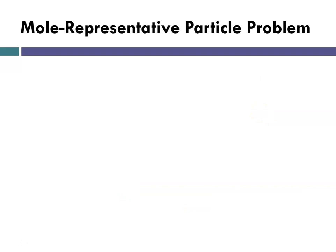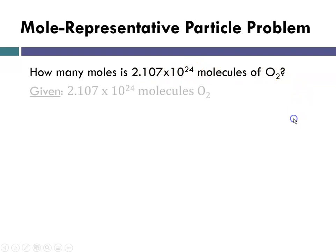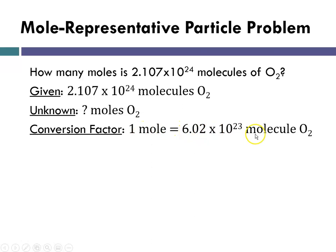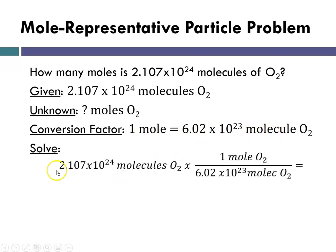And now I'm going to give you an example of a mole representative particle problem. How many moles is 2.107 times 10 to the 24th molecules of O2? So given 2.107 times 10 to the 24th molecules of oxygen, the unknown is how many moles is that? The conversion factor is 1 mole is equal to 6.02 times 10 to the 23rd molecules of oxygen. And we're going to solve. So we're going to say 2.107 times 10 to the 24th molecules of oxygen times 1 mole is 6.02 times 10 to the 23rd, making sure that our molecules cancels out. When we plug that into our calculator, we get 3.5 moles. That only has two sig figs. How many do I need? 1, 2, 3, 4. So I go in and I add some zeros and that leaves me with 3.500 moles. Four significant figures.